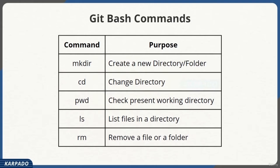'ls' stands for 'list' and lists all files in a directory. 'ls -a' lists all files including hidden files — this will be useful later when exploring the hidden .git directory. Finally, 'rm' stands for 'remove' and deletes a folder or file. Some of these commands come with options that we'll explore shortly.